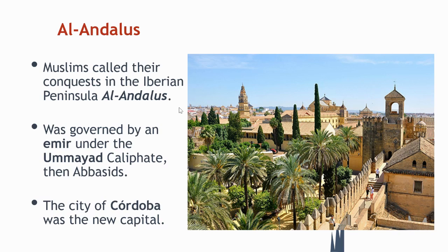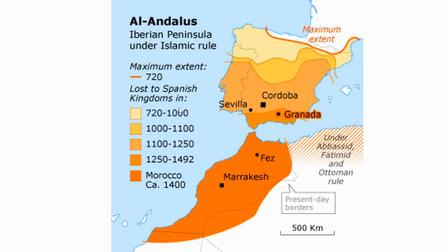Here we can see the extent of Al-Andalus, and the different tones show how the reconquest went from north to south. This is why northern Spain has a very different architectural style and culture than southern Spain, which had a longer Islamic influence.